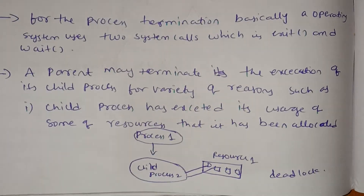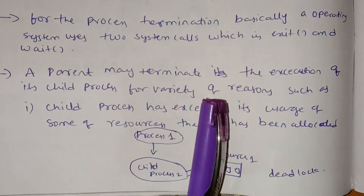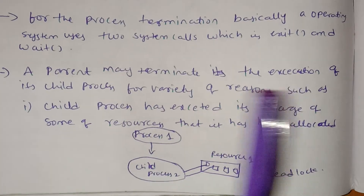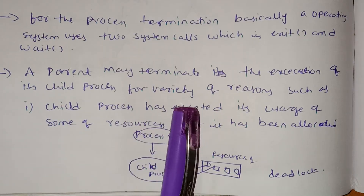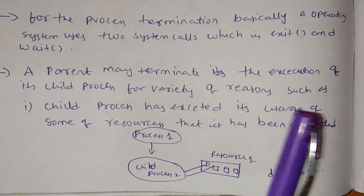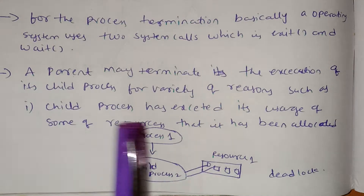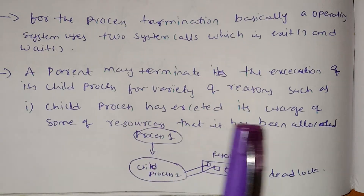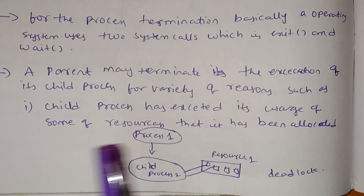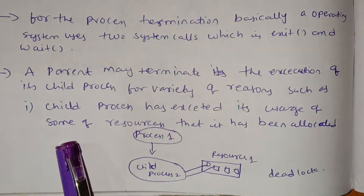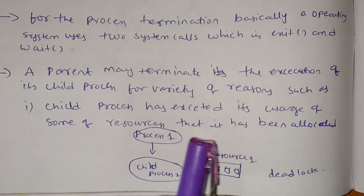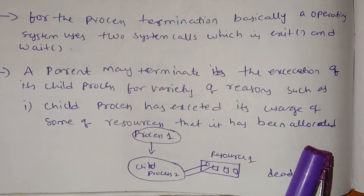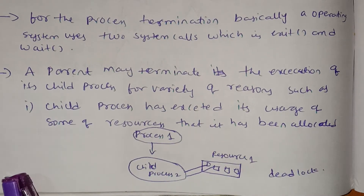A parent may terminate the execution of its child process for a variety of reasons, such as when the child has exceeded its usage of resources that it has been allocated.